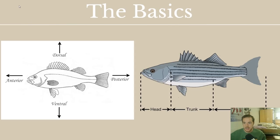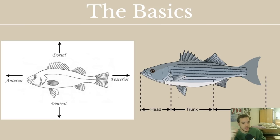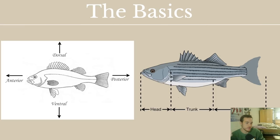The first thing to look at is the basics — things you need to know to talk about a fish in general. The top side is called the dorsal side and the bottom side is called the ventral side. You can remember dorsal like a sail fin on a boat, because the dorsal fin is on the top of the fish. Ventral is just the opposite of dorsal.